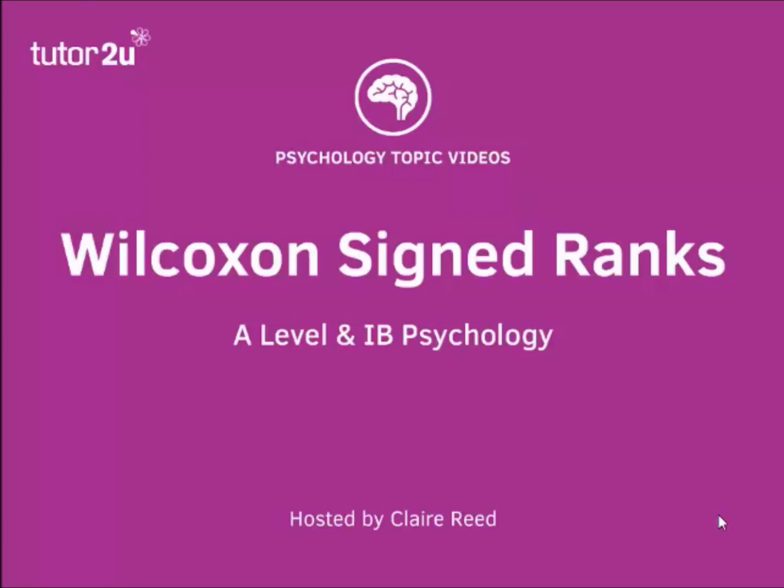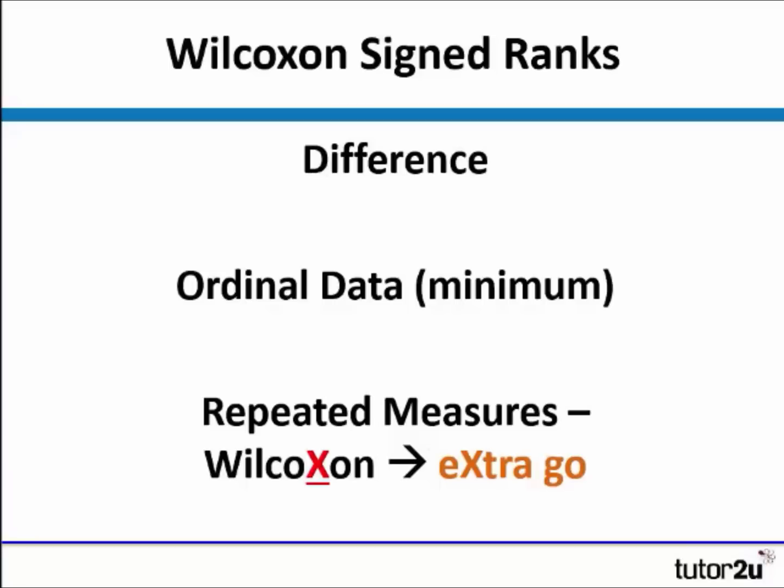This is an A-level and IB psychology video outlining Wilcoxon's signed rank test. Wilcoxon is an inferential statistic which we use when we're looking for differences between groups or data. It uses ordinal data as a minimum, but can also use interval or ratio data, and it uses a repeated measures design.